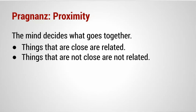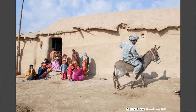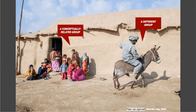Let's talk about proximity, another law of prägnanz. The mind decides what goes together — when you view a scene or image, your brain imagines that things that are close are related and things that are not close are not related. Here's another image from our war photographer. Your brain creates groups through proximity. You see two groups: a group of people on the left who are conceptually related, and a group on the right — a soldier and a donkey. He's not part of the group on the left. This communicates the distance between the people who live in the nation where the war is happening and the soldiers who have been sent in.